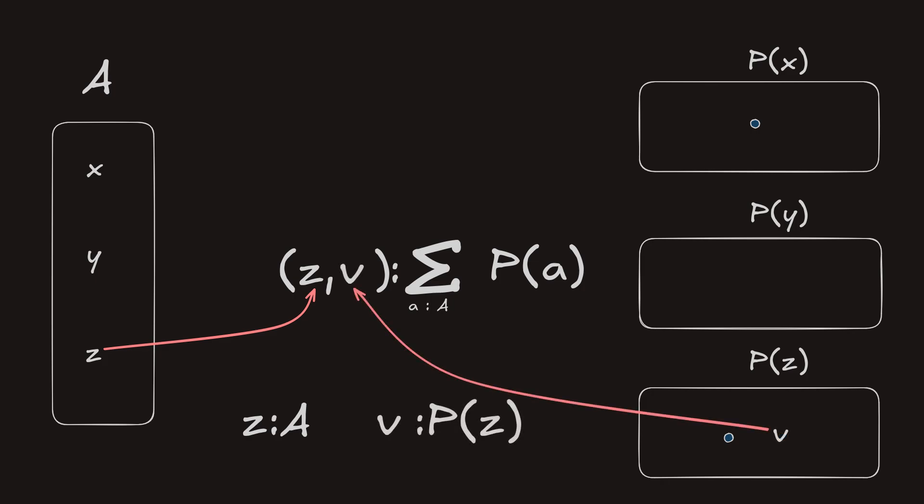In other words, to construct a term in this sigma type, we need a term in A and we need a proof that the proposition P about that term is true.